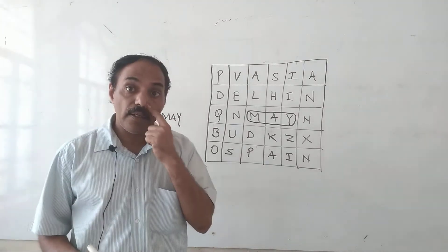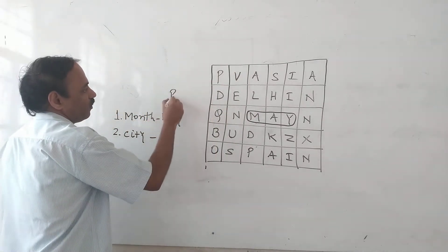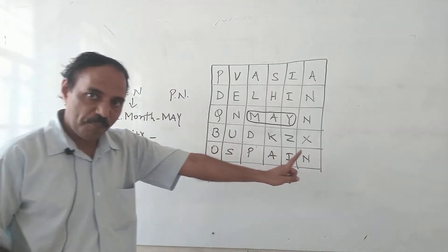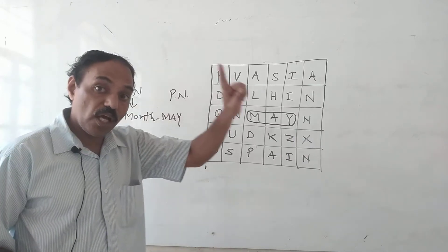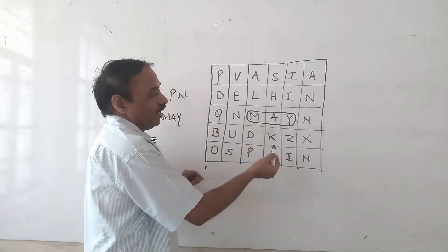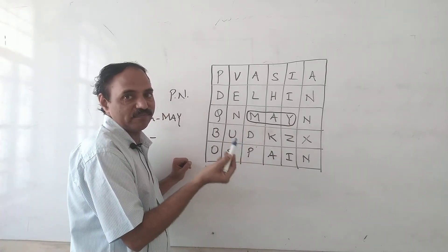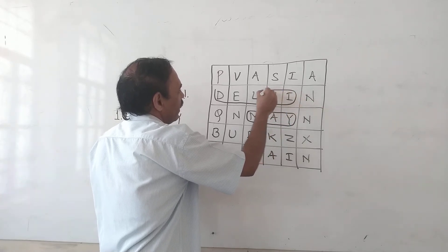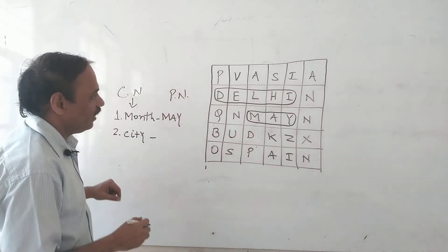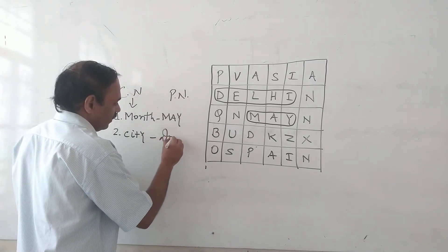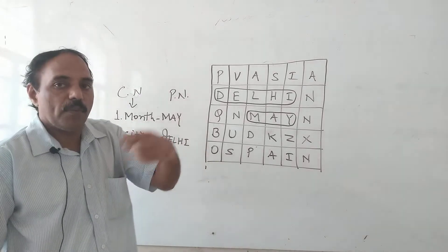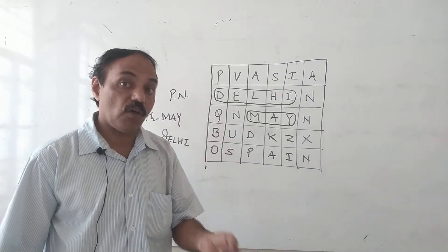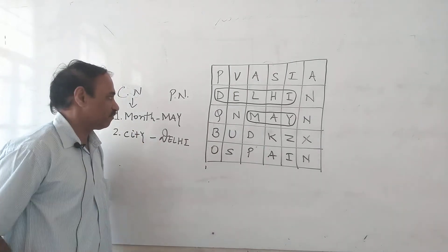Common noun, proper noun, name. May - city. Common noun is city. Now correct - proper name is common name. A specific city. Capital of India - D-E-L-H-I, Delhi. So proper name is Delhi, common name is city.